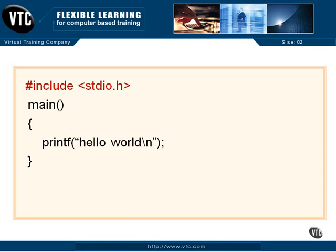The very first line is a pound include. That pound hash mark in the first column is a preprocessor directive. There's a program that's part of the C compiler called the preprocessor that goes through and looks at the code and does replacements, checking, and other work before the compiler is allowed to take the preprocessed source code and start creating object code from it. We'll see that there are quite a few preprocessor directives — include is just the one we're using here.